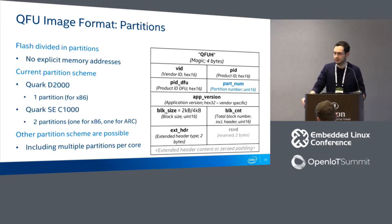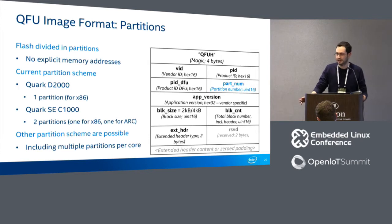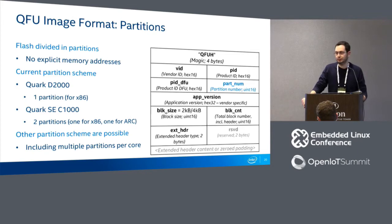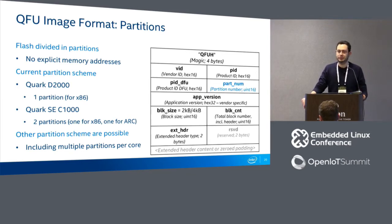An interesting decision is that we do not put explicit memory addresses in the header; instead we use the concept of partitions. We assume the flash is divided into partitions, and every image targets a partition. On the D2000 there is one partition for an x86 application; on the C1000 there are two partitions — one for the x86 core and one for ARC. Other partition schemes are possible, including multiple partitions per core to support a fallback image for future OTA extensions.